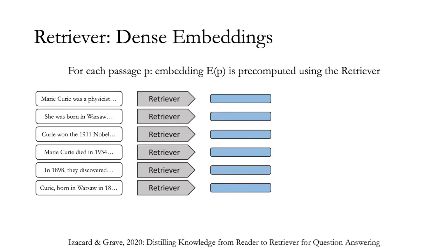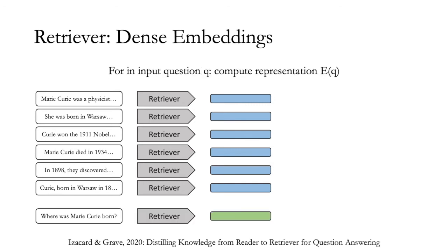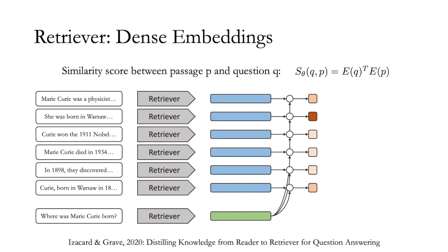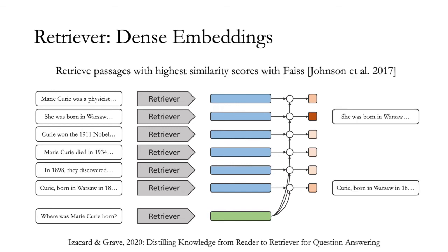For the retriever, we use a model which associates a dense representation to each passage, and to be able to query a large knowledge source at inference, we follow a common pipeline. First, for each passage, an embedding is pre-computed using the retriever. Then, we embed the input question with the same model. And the similarity score between passage p and question q is given by the dot product between the two representations. To obtain the reader input, we retrieve passages with highest similarity scores. This operation can be done efficiently by pre-indexing all Wikipedia passages and using a maximum inner product search library, such as FAISS.